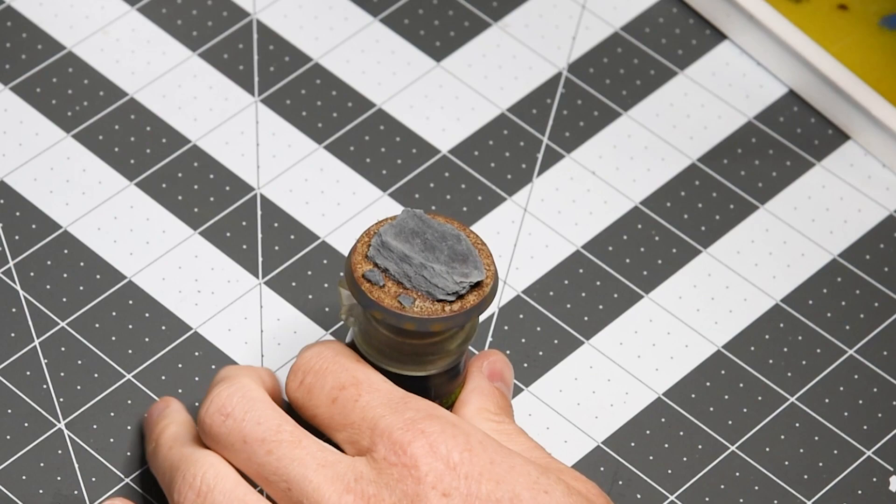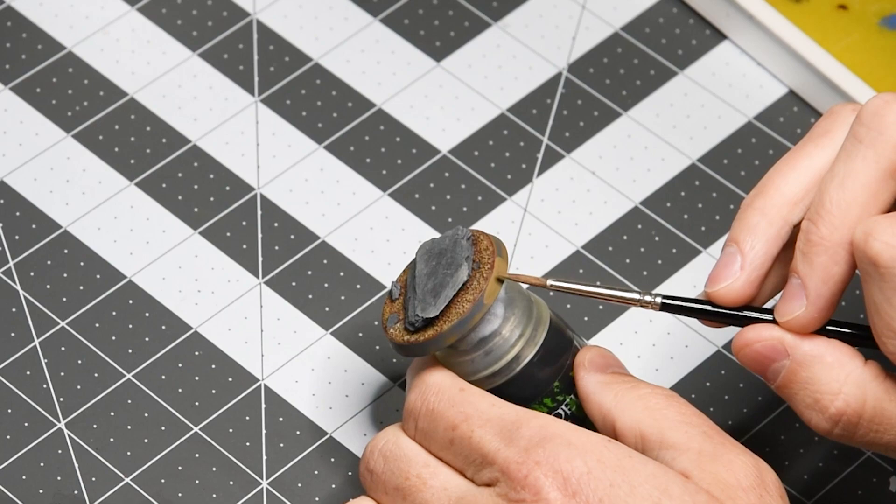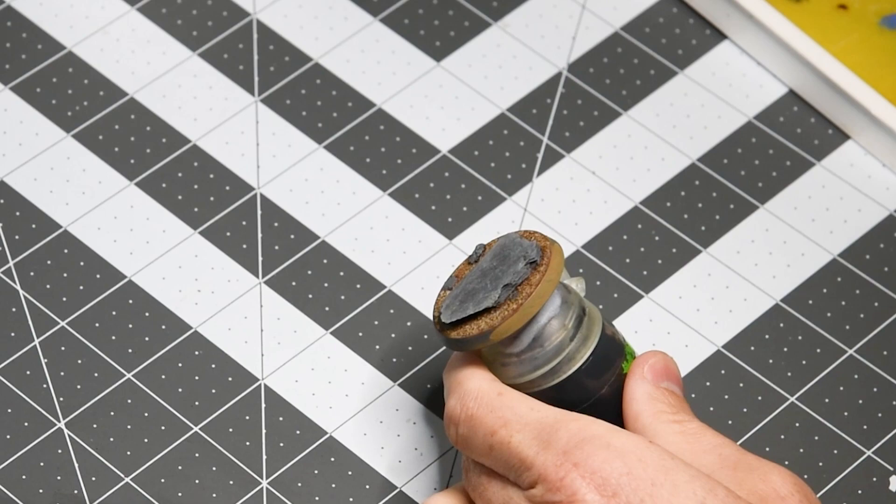So forgive me I lost the footage of me applying my first layer of steel legion drab around the outer edge of the base but you're going to see me apply a couple more layers here and the key thing is use a better brush when we're doing this final color around the edges.